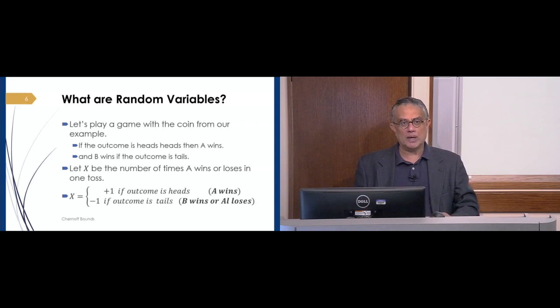So to understand this, let's play a game with our coin, and let's say that there are two people playing the game, and if the head's outcome is seen, A wins. If a tail's outcome is seen, B wins. And let's let X be, in this case, we'll call it in future a random variable, be the number of times A wins or loses, and give it a value plus one if you see heads, A won, minus one if B wins or A loses.